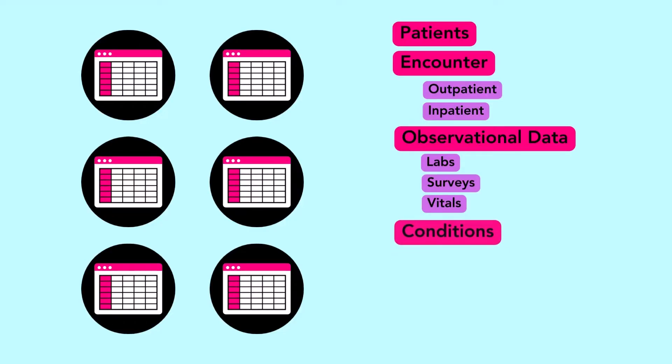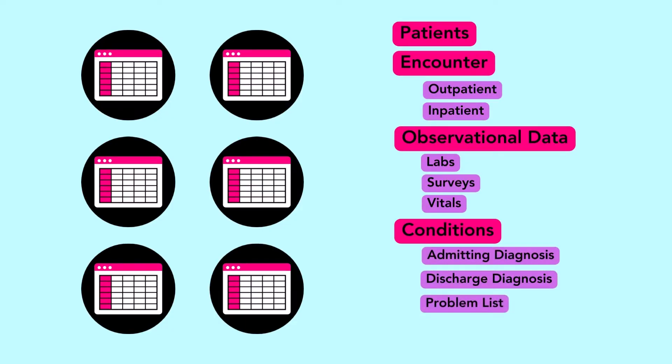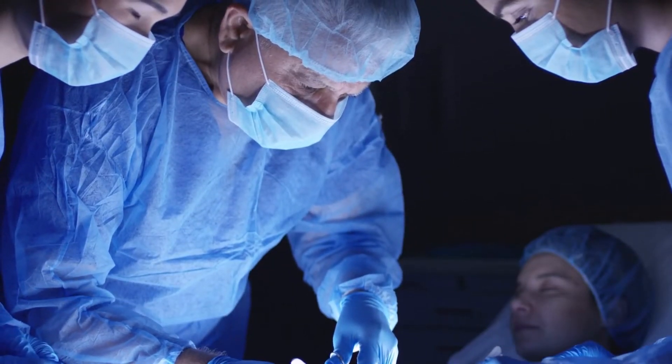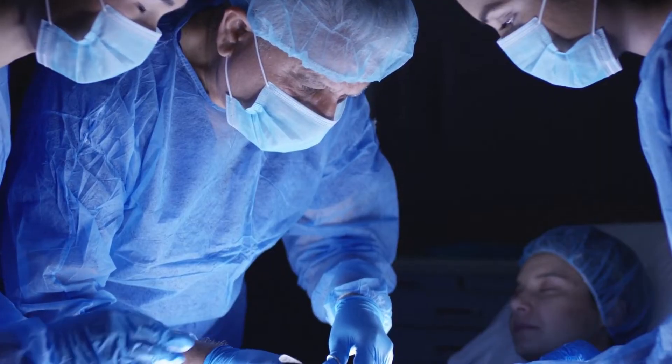You also have a conditions table, which stores things like the diagnosis during the encounter, the admitting diagnosis, or the discharge diagnosis. You might have a problem list, which tracks the active and resolved problems a patient had throughout their lifetime. There's also a procedures table that tracks all of the surgeries or medical interventions performed on the patient — those could be major things like heart transplants, or routine things like a colonoscopy. This doesn't even scratch the surface — one patient can generate an enormous amount of data within their lifetime for just one hospital.